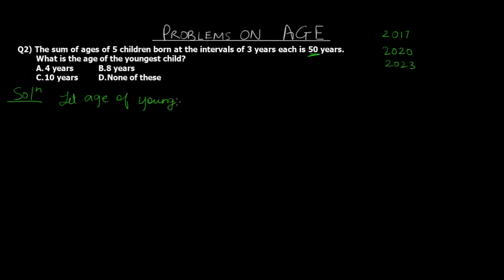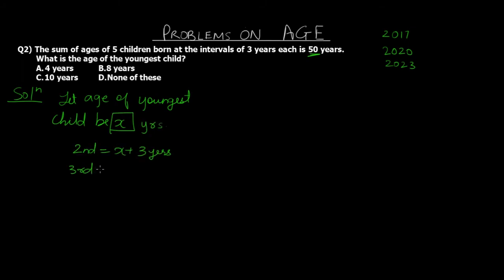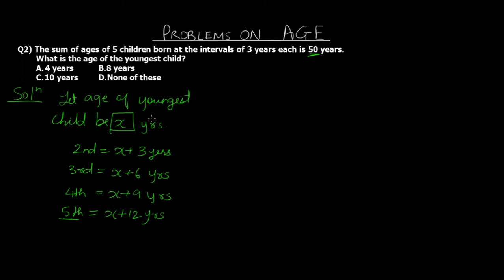We'll make an assumption: let the age of the youngest child be x years. The second youngest child would be x plus 3 years, the third would be x plus 6 years, the fourth x plus 9 years, and the fifth x plus 12 years — the fifth being the oldest. This works because if the youngest is 10 years old, the second youngest would be 13, since they were born three years earlier and are therefore three years older.